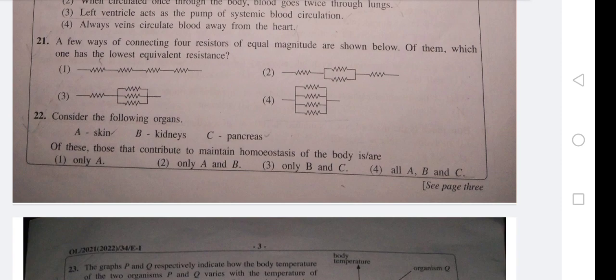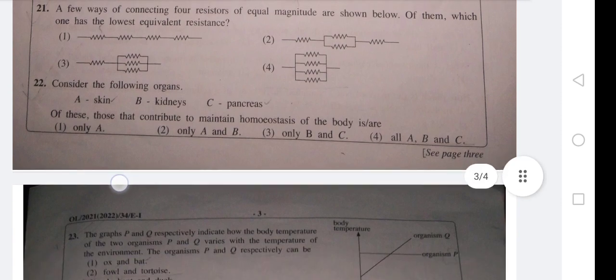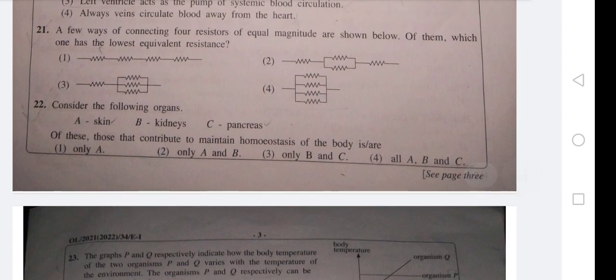In the second one, first and the fourth one will be added. The middle parallel one will be divided. So accordingly, the fourth one only will have the lowest equivalent resistance because all the resistors are connected in parallel.